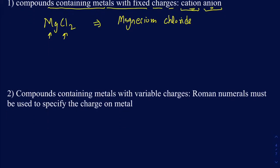Let's take another example: Ca(OH)₂. The OH is not a typical anion from the periodic table — it's a polyatomic anion with a 1− charge. Calcium is in Group 2A, so it has a 2+ charge. That's why there are two OH⁻ groups — to balance the charges. When it comes to naming, since calcium has a fixed charge, you just name the cation and the anion: calcium hydroxide.